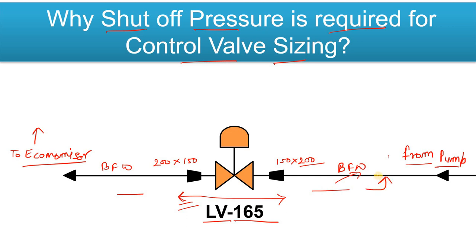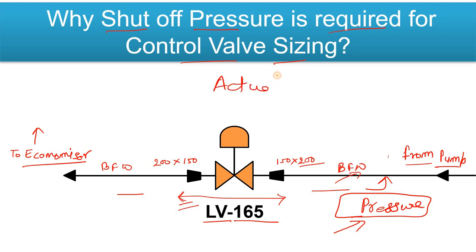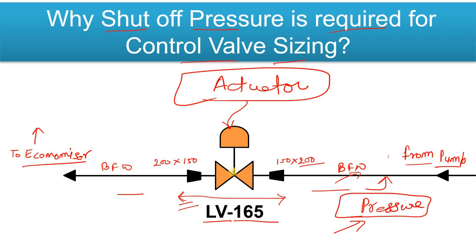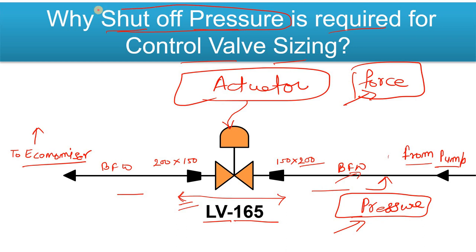The shutoff pressure is the maximum pressure that could exist within this line. The significance of the shutoff pressure is that it is used to design and size the control valve actuator. The actuator helps the control valve to open or close. When the actuator operates, it lifts or lowers the valve's stem and disc. To lift the stem and disc, a certain force is required — and to calculate this force, the shutoff pressure is needed.